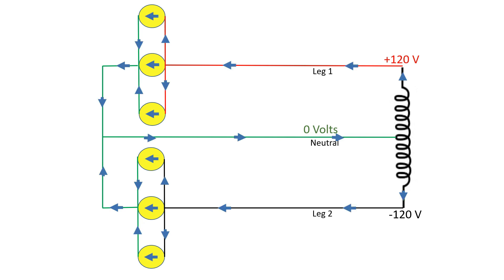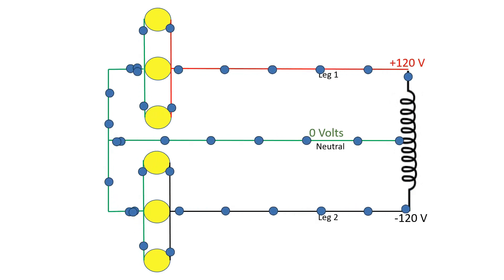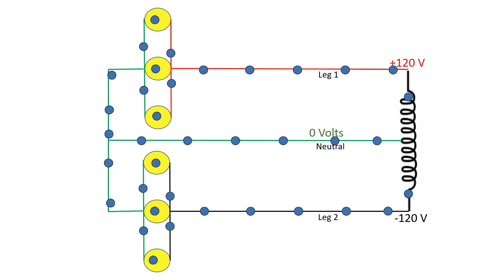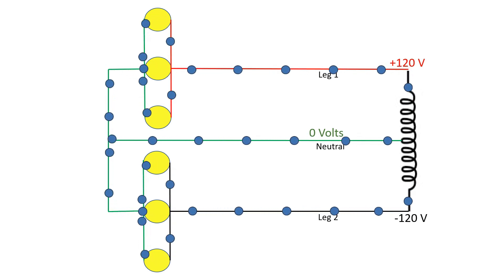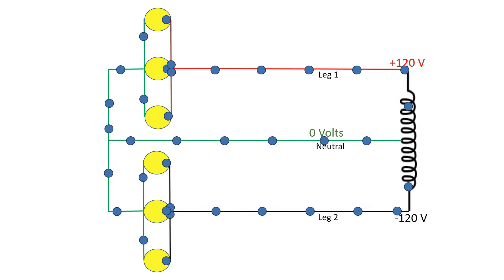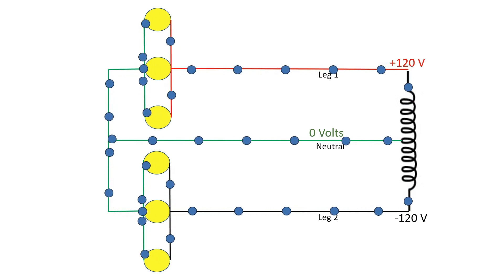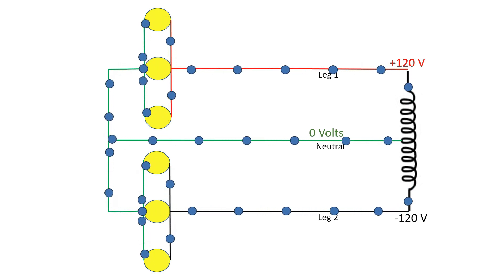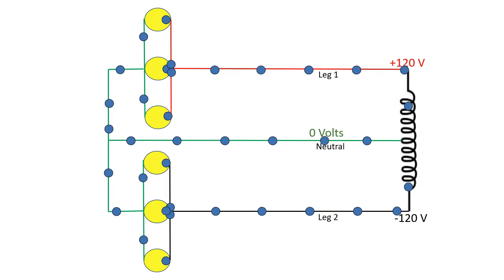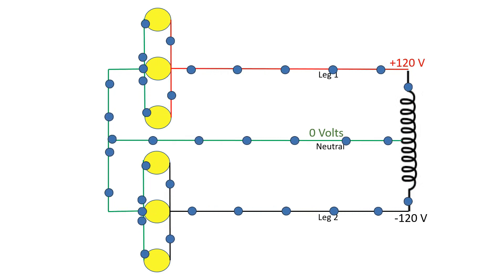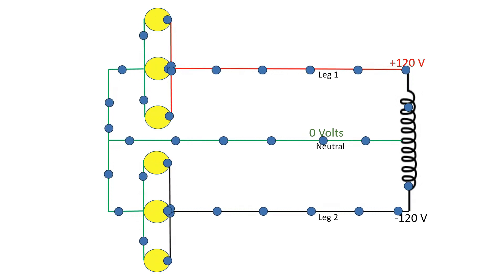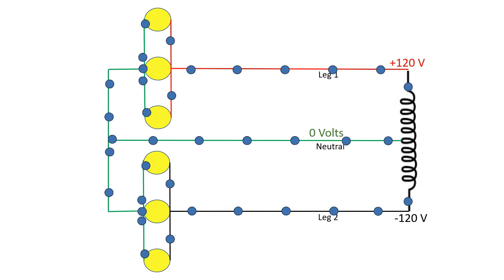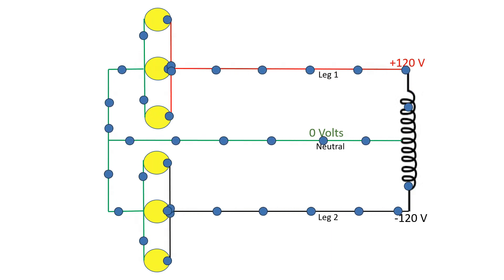The three lights on each leg are in parallel with each other, which means they are all at the same voltage. I'm going to rotate these lights so you can see they're definitely in parallel — this is the exact same circuit with the lights simply rotated vertically instead of horizontally. These arrows show how the electricity flows. One thing I'll interject here is that when you have a completely balanced load on each leg, you actually will have no current on the neutral wire.